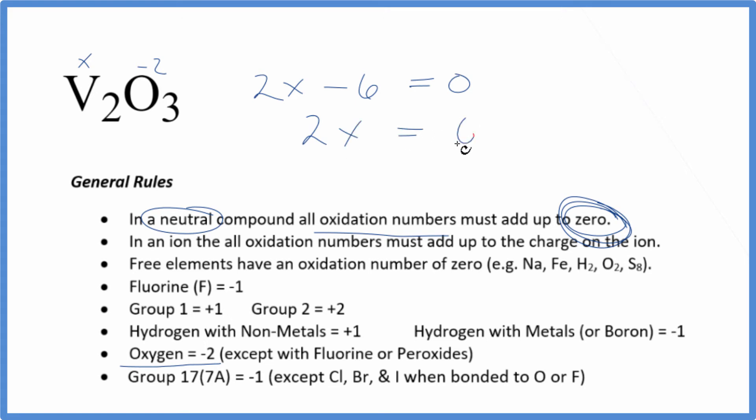2X minus six equals zero. Add six to both sides, so 2X equals six. Divide both sides by two, X is going to equal a positive three. So the oxidation number on the V in V2O3 is going to be plus three.